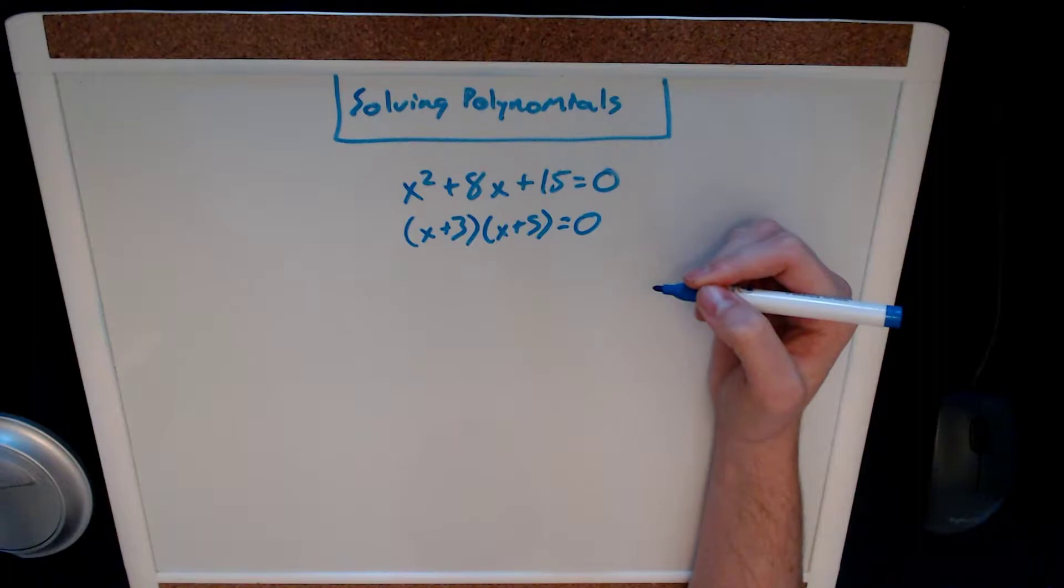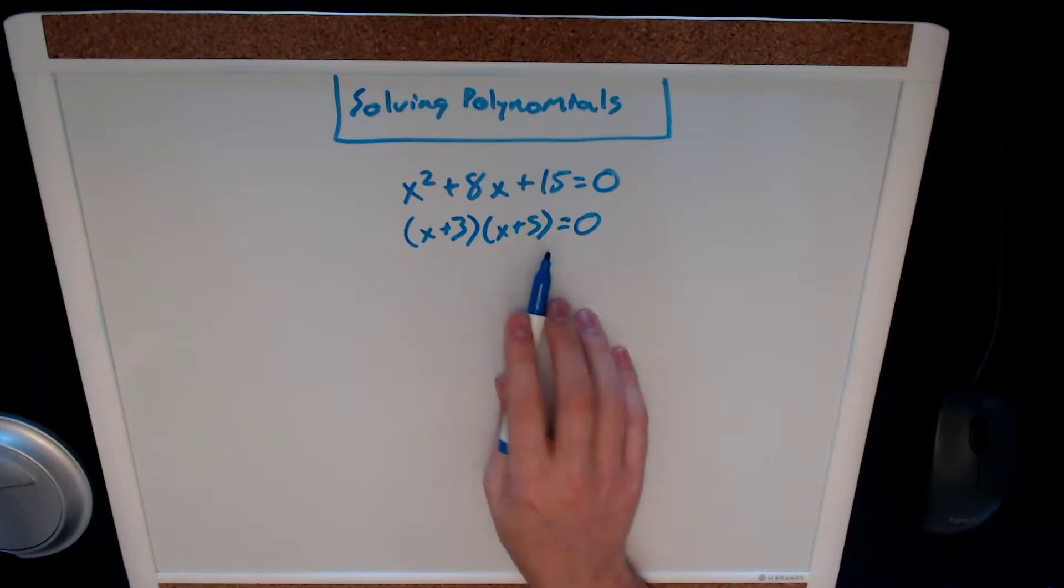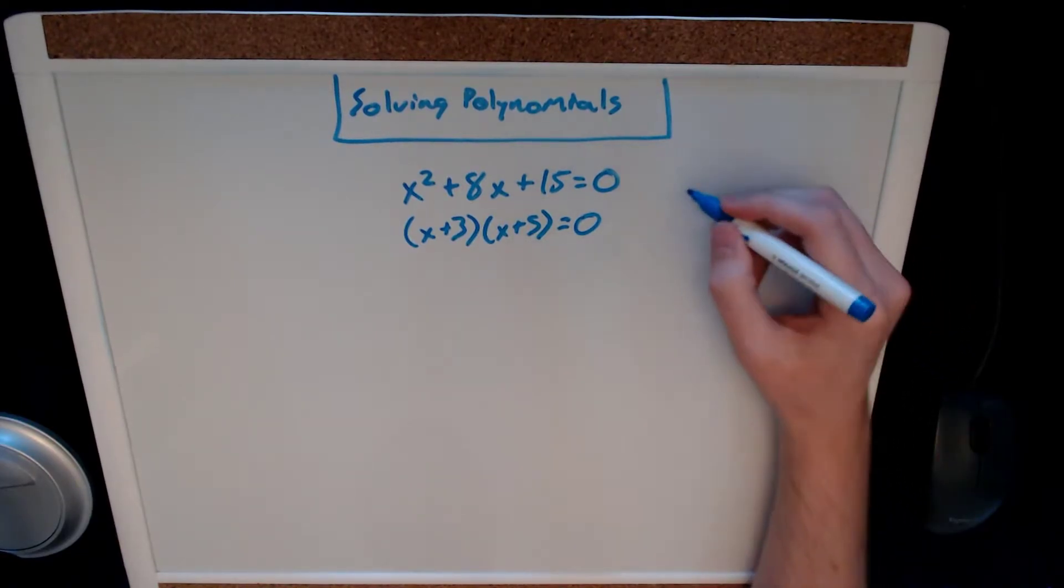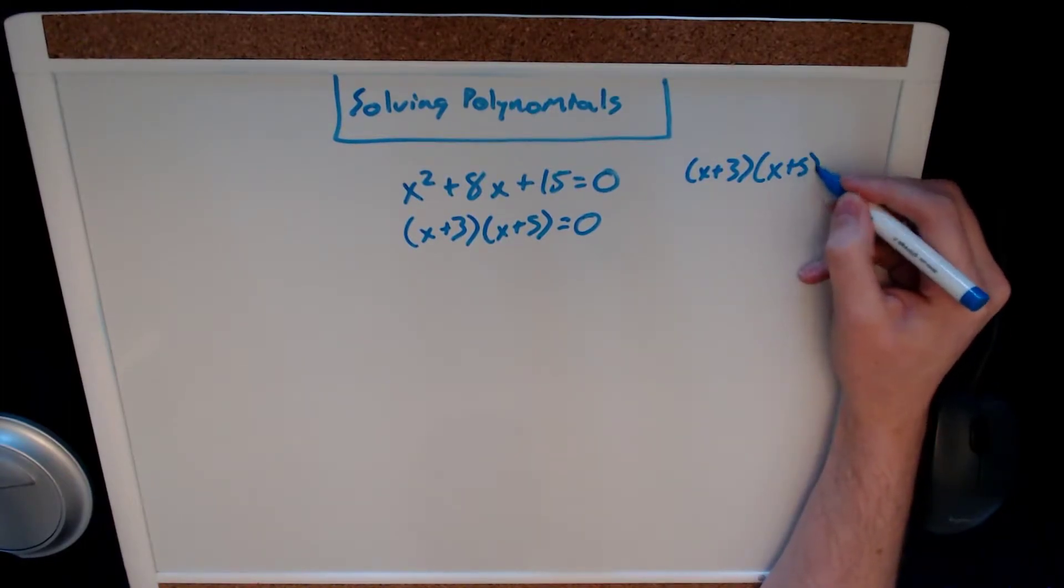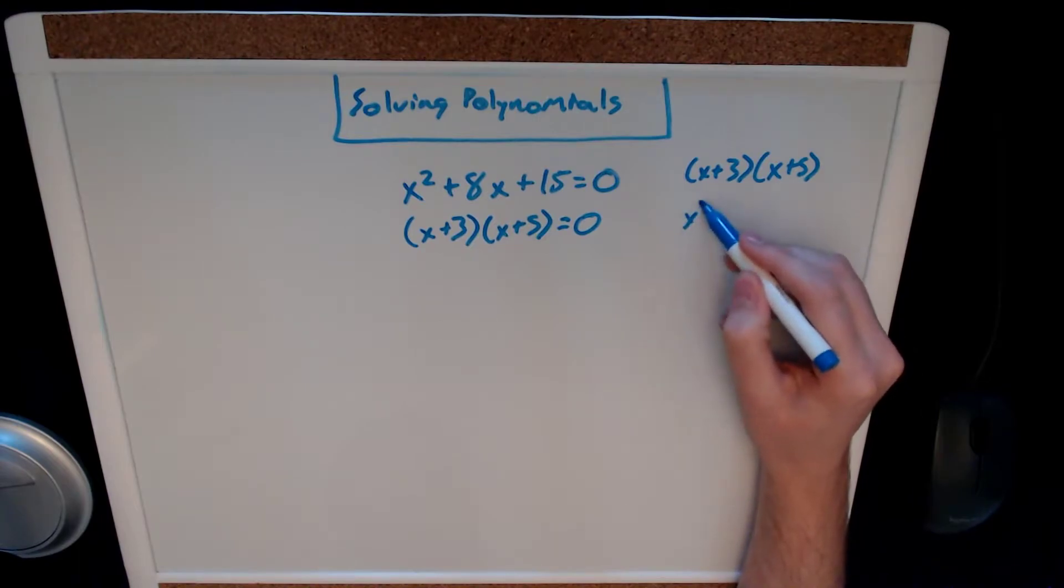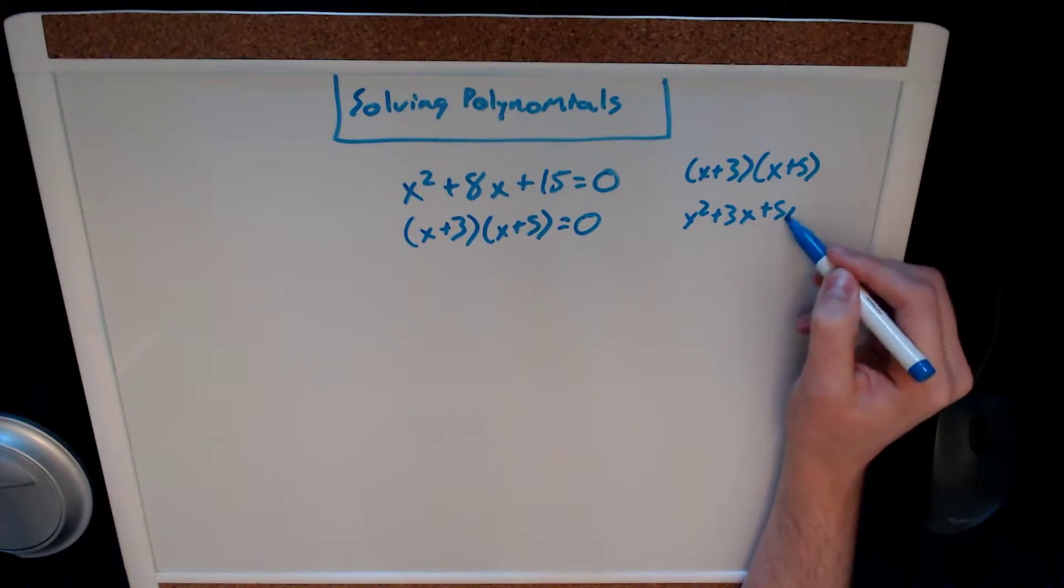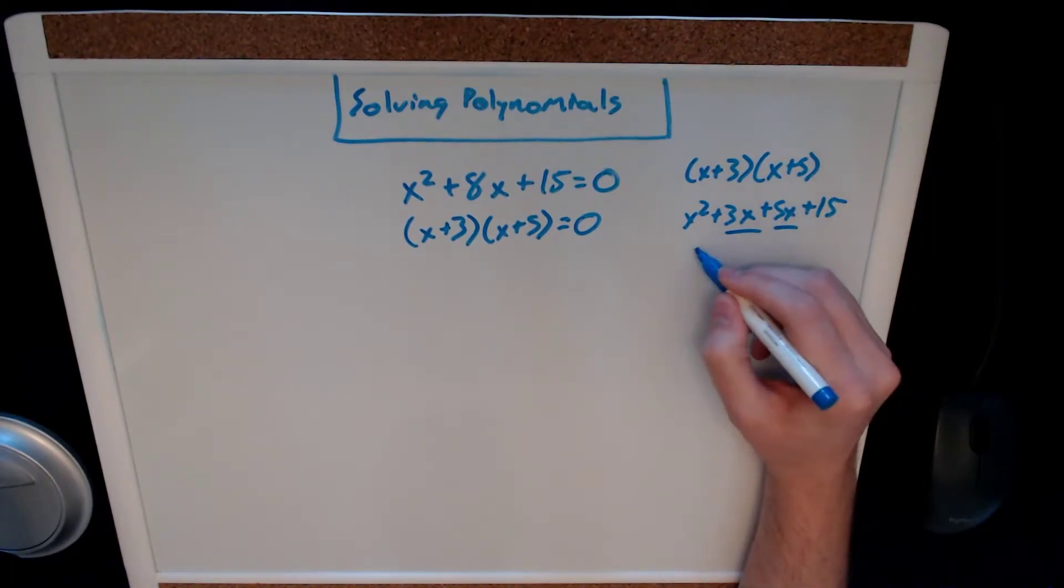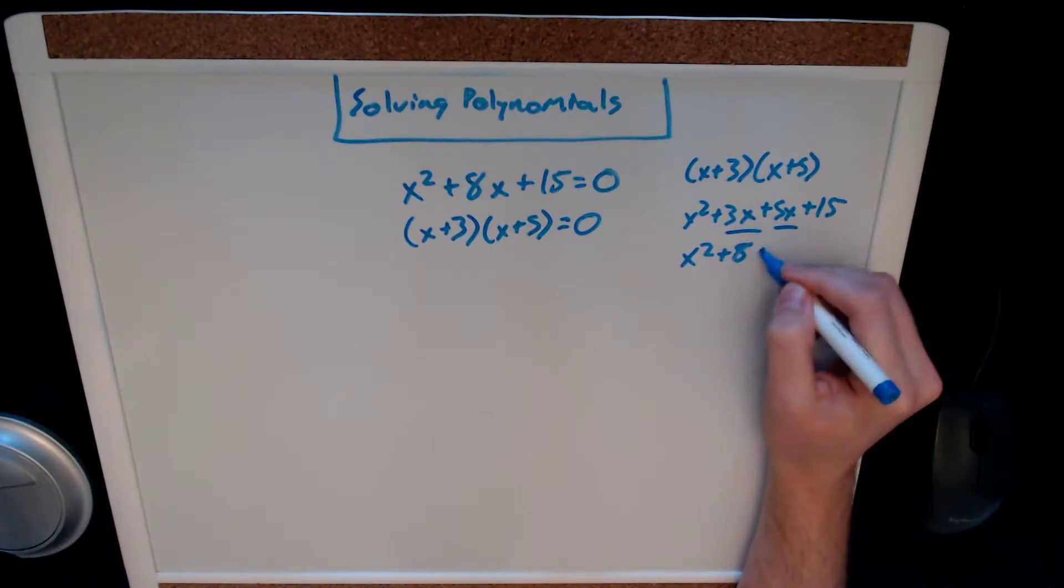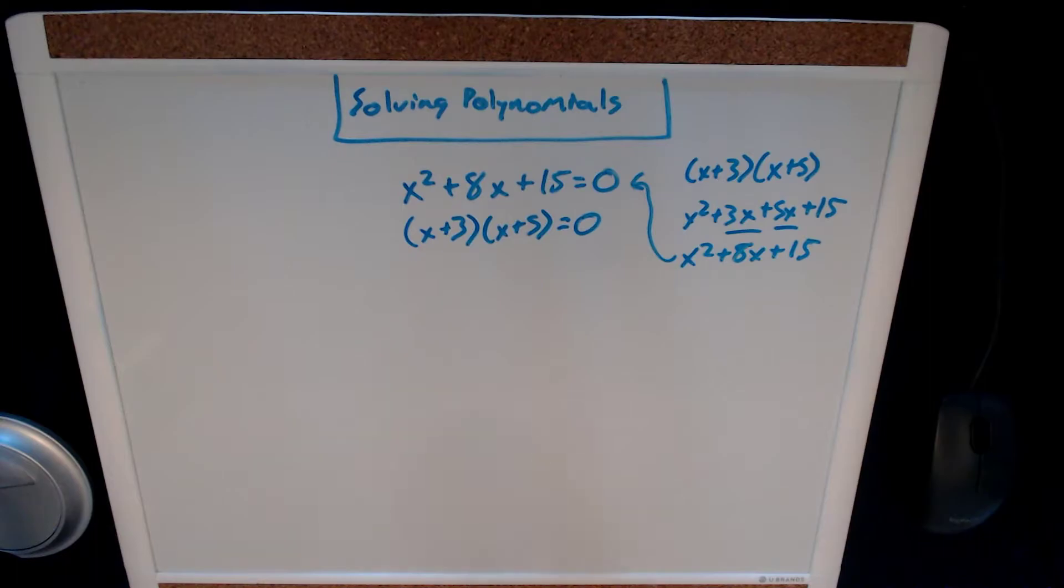Now this might seem arbitrary, but you can see that you have x plus three and x plus five. So we have something that we can FOIL back out. Let's do this on the side real quick. We have x squared plus 3x plus 5x plus 15. And we can sum these two like terms together to x squared plus 8x plus 15, which is what we started with, set equal to zero.